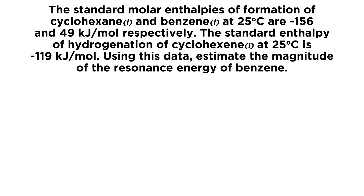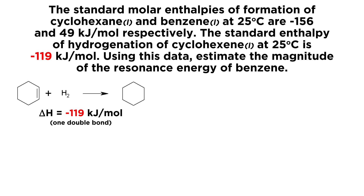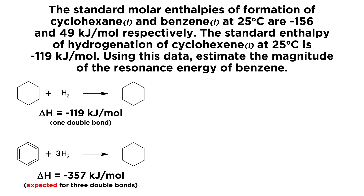Let's look at the reaction whereby we perform hydrogenation on cyclohexene to get cyclohexane. The standard enthalpy of hydrogenation for cyclohexene is negative 119 kilojoules per mole — that is how much energy is released when a single pi bond on cyclohexene is hydrogenated. Therefore, if we perform hydrogenation on benzene, we could triple this value and get negative 357 kilojoules per mole. Given that benzene has three pi bonds, we might expect this to be the energy released when benzene is fully hydrogenated to give cyclohexane.